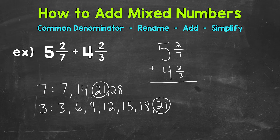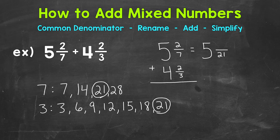Now that we have that common denominator, we're going to rename the fractional part of our mixed numbers using it so we're able to add. We do not need to do anything with the whole numbers. Using equivalent fractions, let's rename 2 sevenths with a denominator of 21. We need to think: how do we get 7 to equal 21? Well, 7 times 3 is 21. Whatever we do to the bottom, we must do to the top — 2 times 3 is 6. So 6 twenty-firsts is equivalent to 2 sevenths.